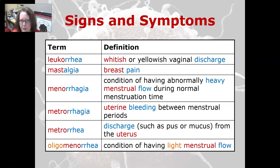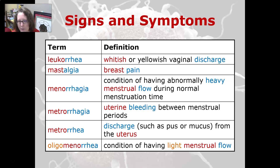Leukorrhea is a whitish or yellow vaginal discharge. Mastalgia is breast pain. Menorrhagia is a condition of having abnormally heavy menstrual flow during the normal menstrual time — that's often due to excess estrogen.